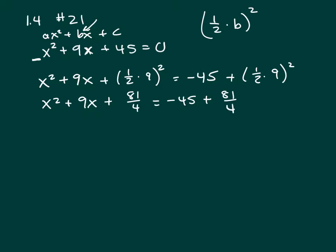And this is going to factor into x plus 9 halves, quantity squared — that's x plus 9 halves times x plus 9 halves. If you go on the side of your paper and FOIL that out, you will get this.